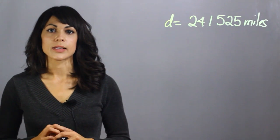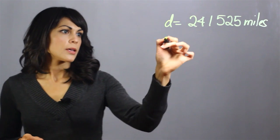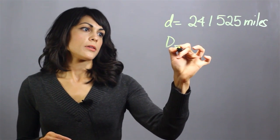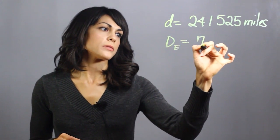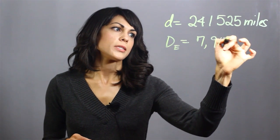The other distance that we need to know is the diameter of the Earth, and the diameter of the Earth is equal to 7,913 miles.